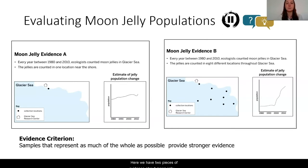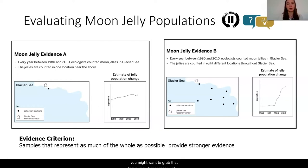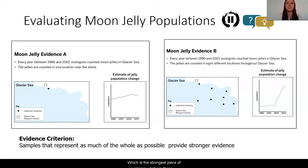Here we have two pieces of evidence about moon jelly population samples. Both pieces of evidence were taken between 1980 and 2002. The ecologists counted moon jellies, and as you'll see there are some differences between what the evidence showed and where it was collected. I'd like you to pause the video — this is a great time to grab a family member or reach out to a friend to talk about what you think the evidence is telling you. Which is the strongest piece of evidence? What are these different evidence cards telling you about the moon jelly population?